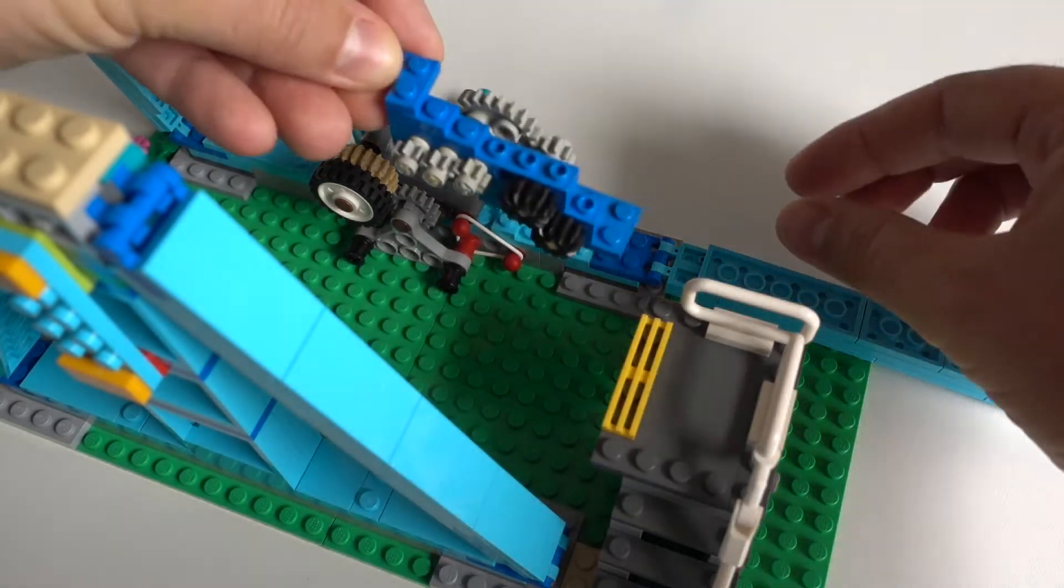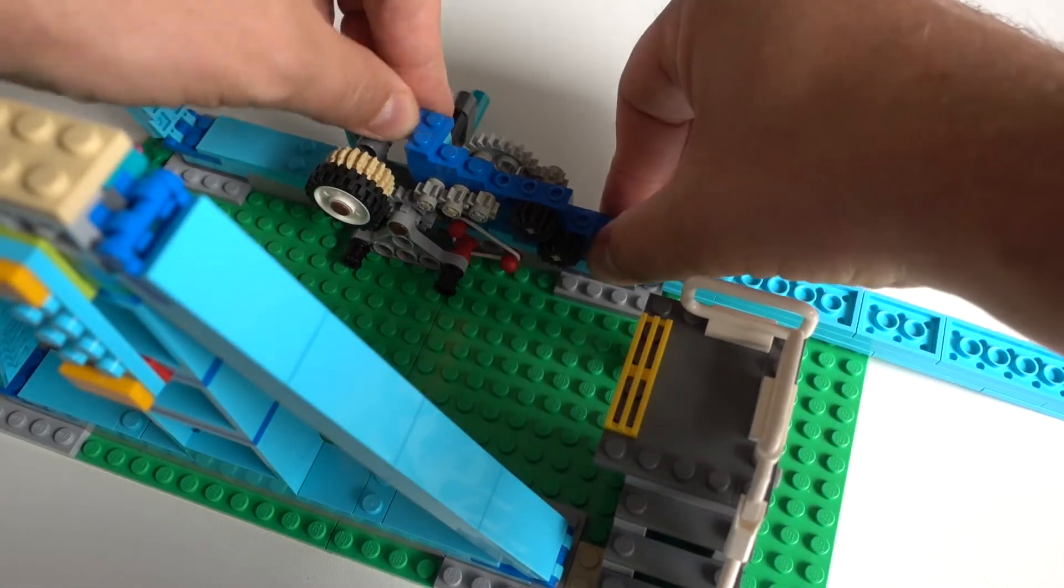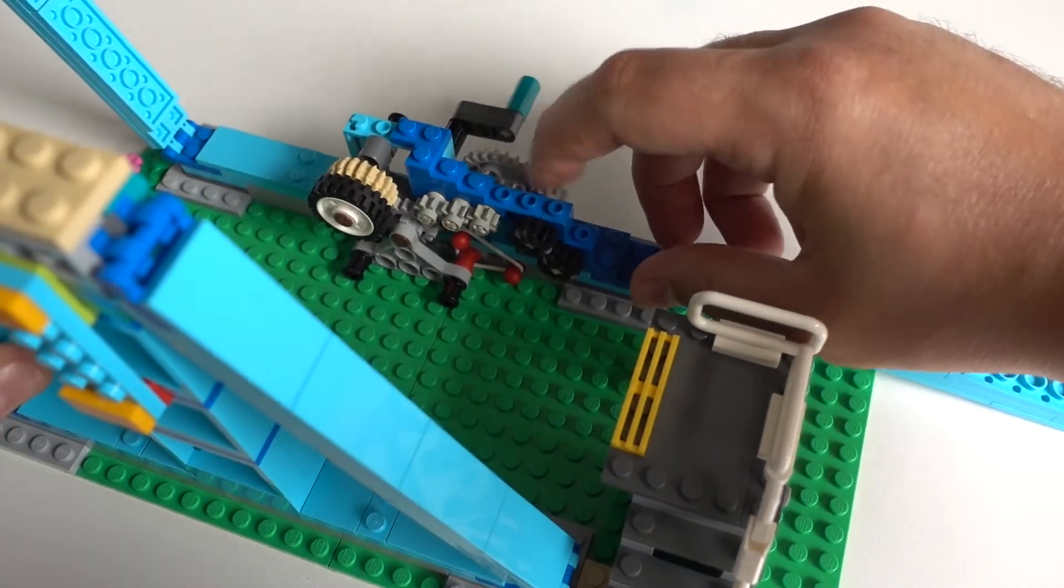Then we can just attach this small build to the ferris wheel and check that the gears can rotate freely.